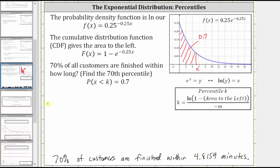Now I also want to mention, there is a quick formula we can use to find the percentile k given by this formula here. And let's go and just verify we get the same value. We would have k, the 70th percentile.